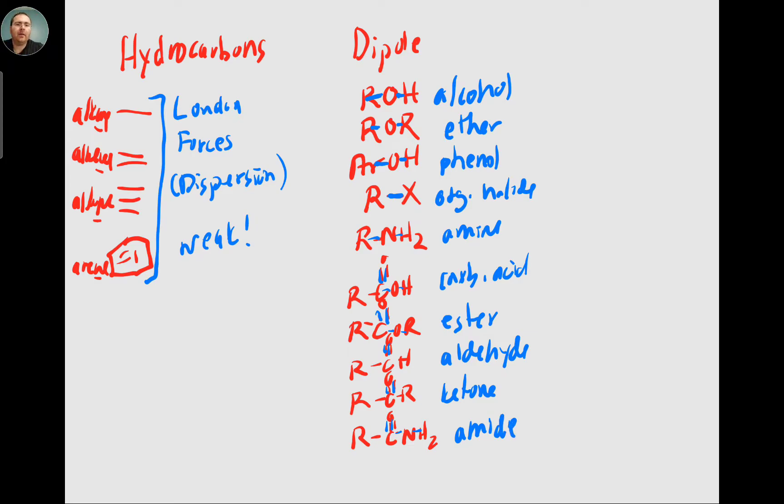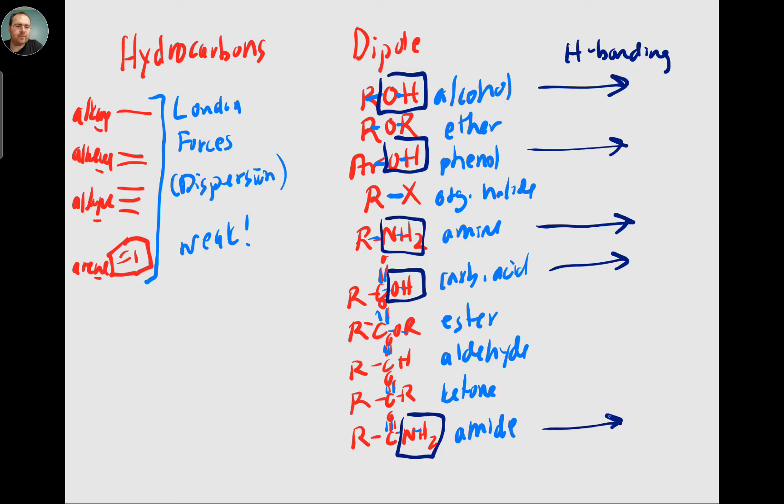But then we look at who has the best of the best strength. So who has hydrogen bonding? Hydrogen bonding is OHs and NHs. So alcohols have hydrogen bonding, phenols have hydrogen bonding, amines have hydrogen bonding, carboxylic acids have hydrogen bonding, and amides all have hydrogen bonding. They're going to be the best of the best.